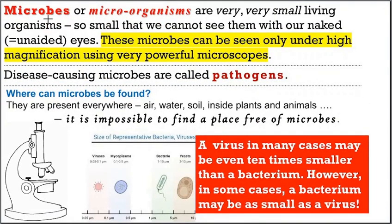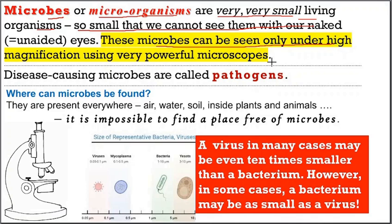Microbes are also called microorganisms because they are very, very small in size. But they are living things, and they are so small that we cannot see them with our naked eyes. We can see them only under high magnification using a powerful microscope.